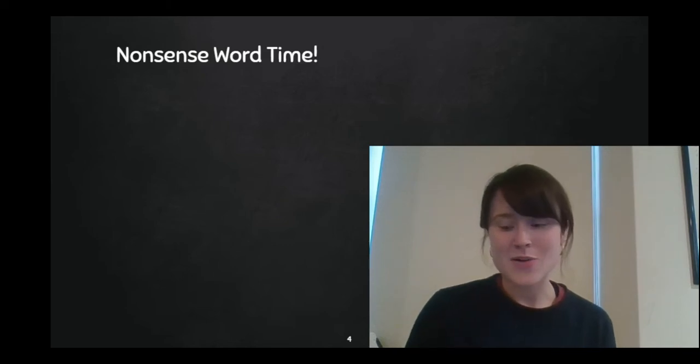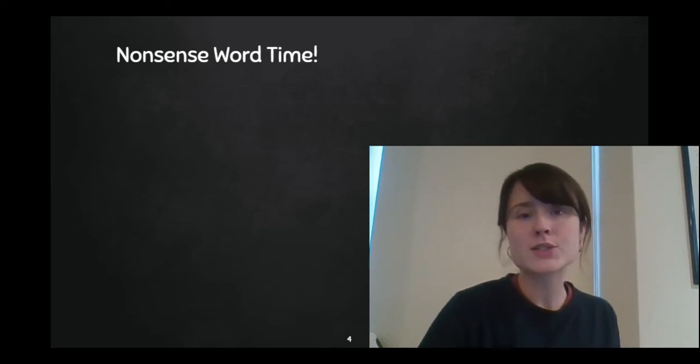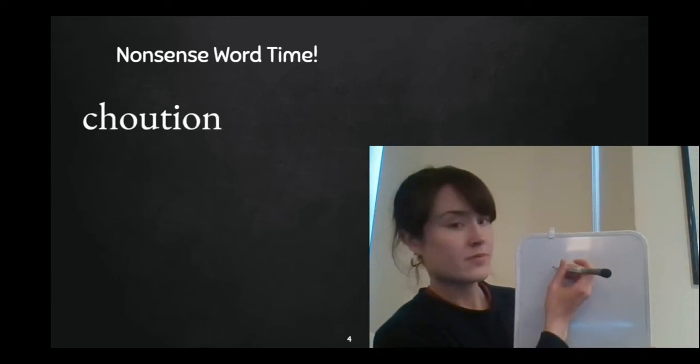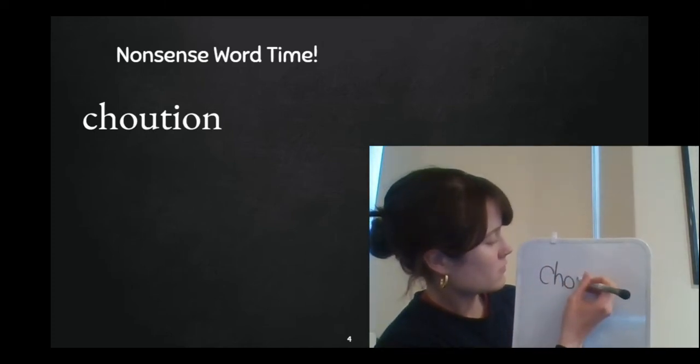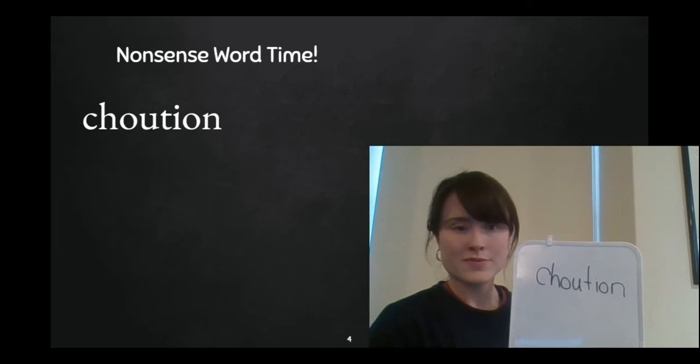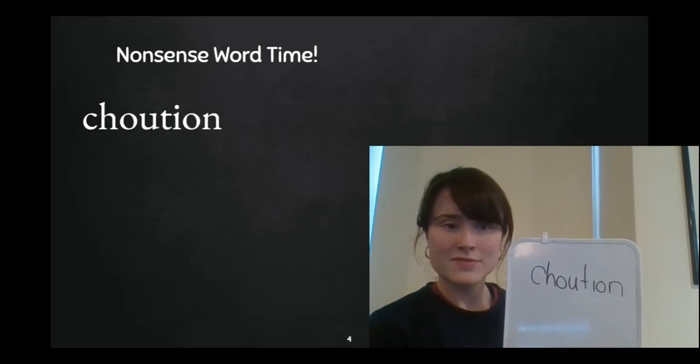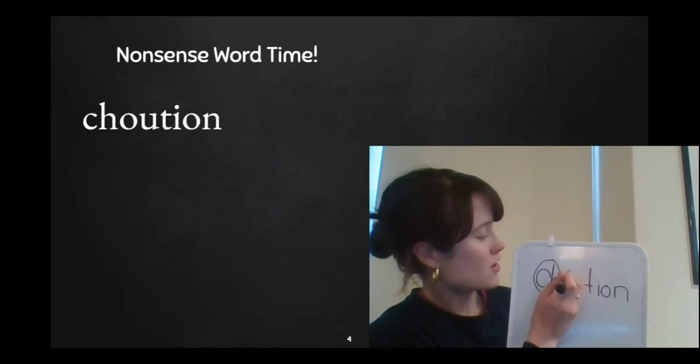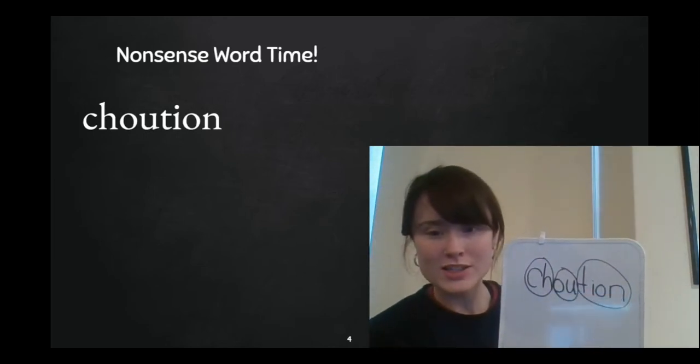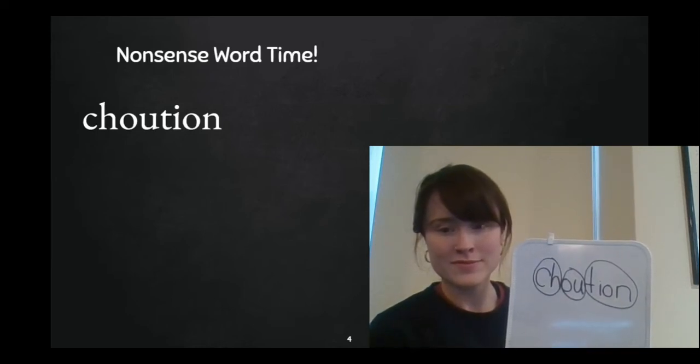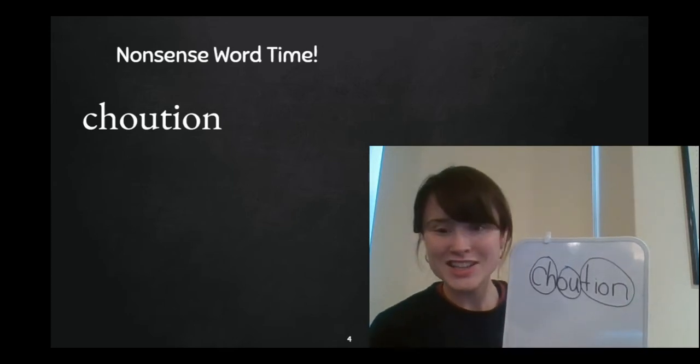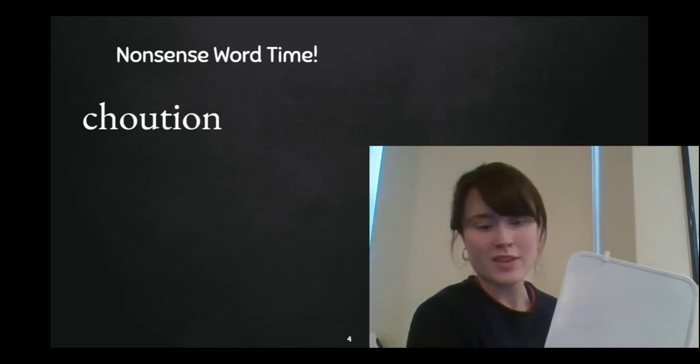All right, first grade friends. Next. It's time for some nonsense words. So I want you to write this word on your board and go ahead and circle all of the chunks that will help you blend it and try to read it to yourself. I'll write it on my board, too. What did you find? Oh, you found C-H says ch. O-U says ow. And C-I-O-N says shun. Go ahead and blend it to yourself. Awesome. Let's blend it together. Ready? Go. Choution. Say silly choution. That one's really silly when we say it.